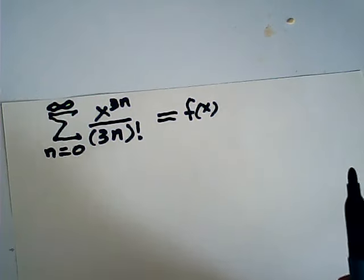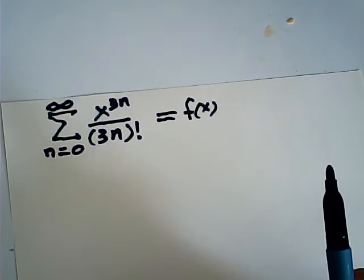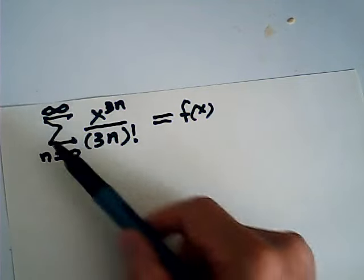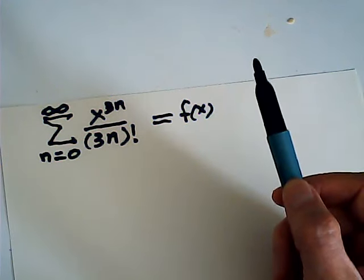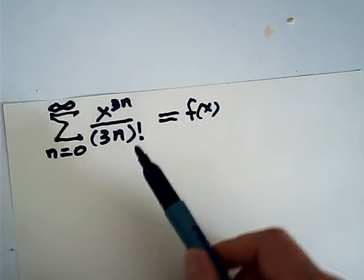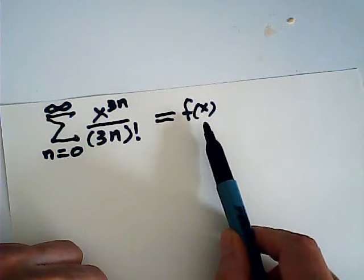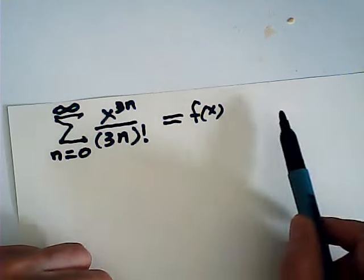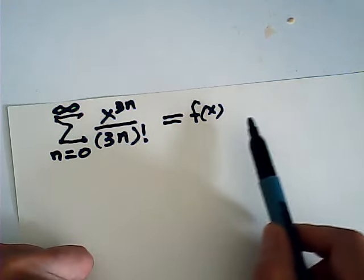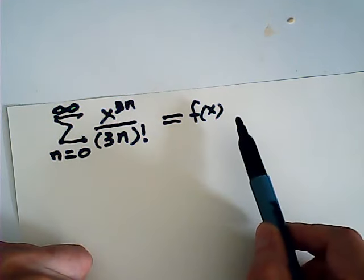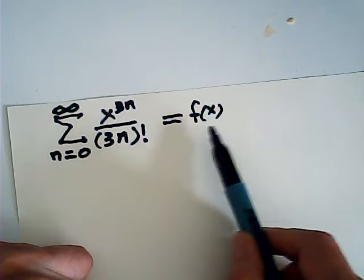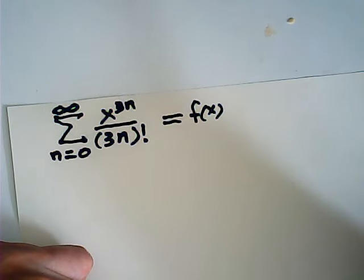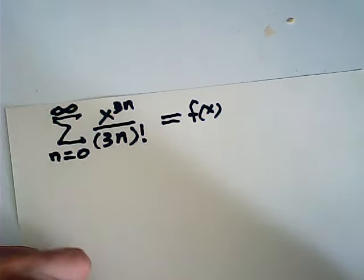Let's take a look at this question. Here we have a series expansion — let's call it f of x — and we want to find the sum of the series in terms of x. In other words, we want to find f of x as the closed-form sum of the series.